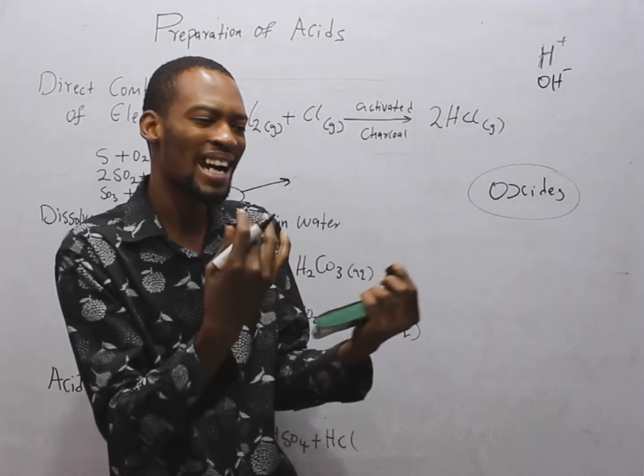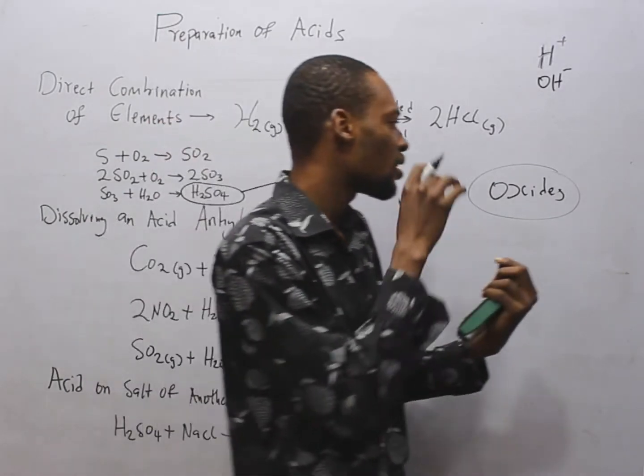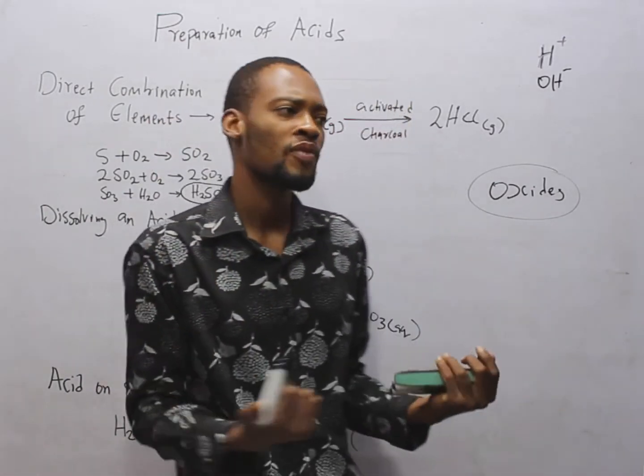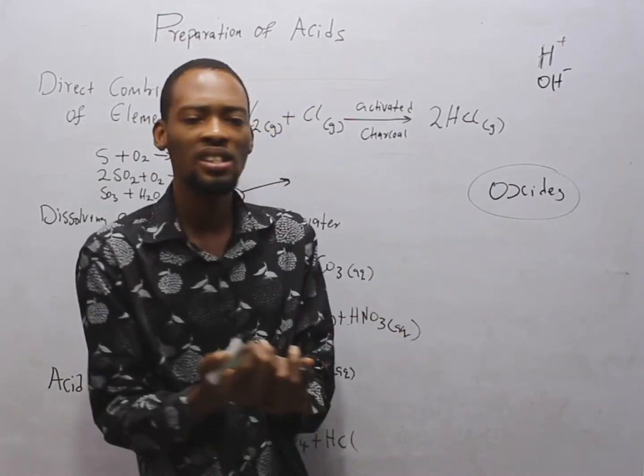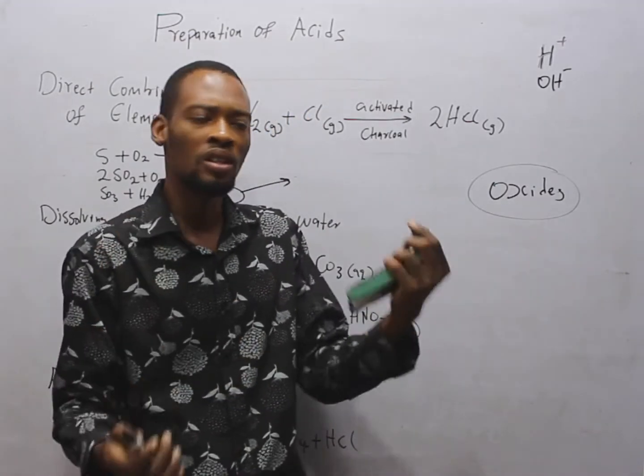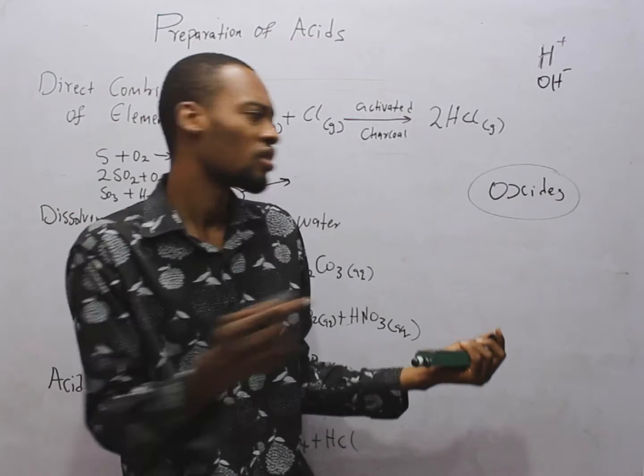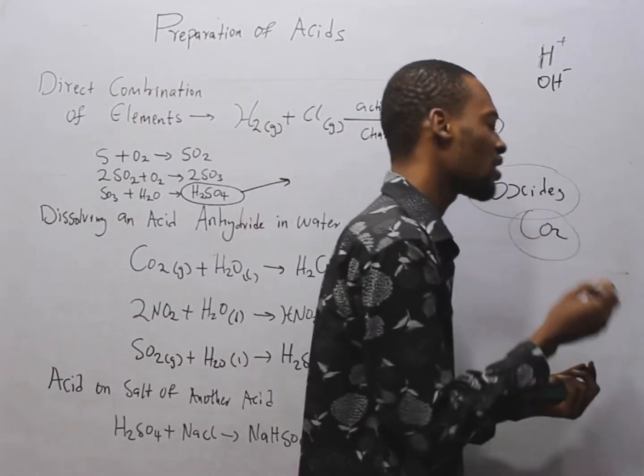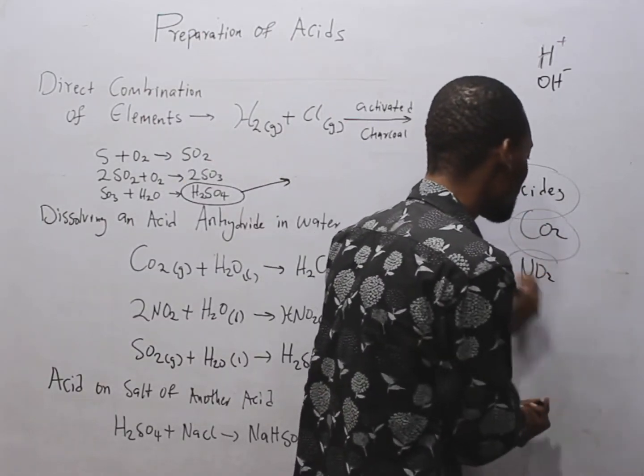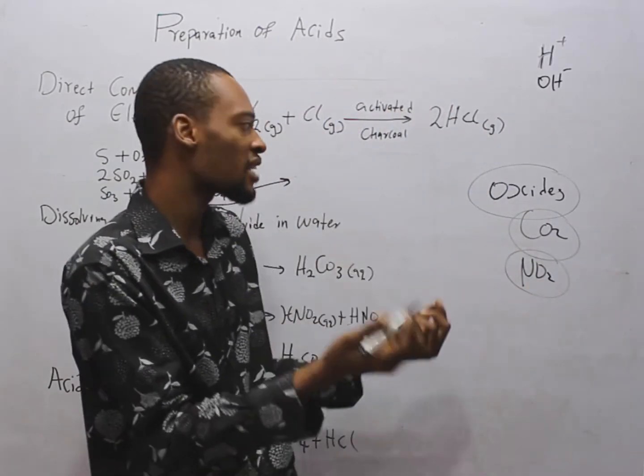These oxides are referred to as acid anhydrides. Now, what is an oxide? When an element reacts with oxygen alone, they are called oxides. CO2, carbon dioxide. NO2, oxygen and other elements reacting, they form oxides.